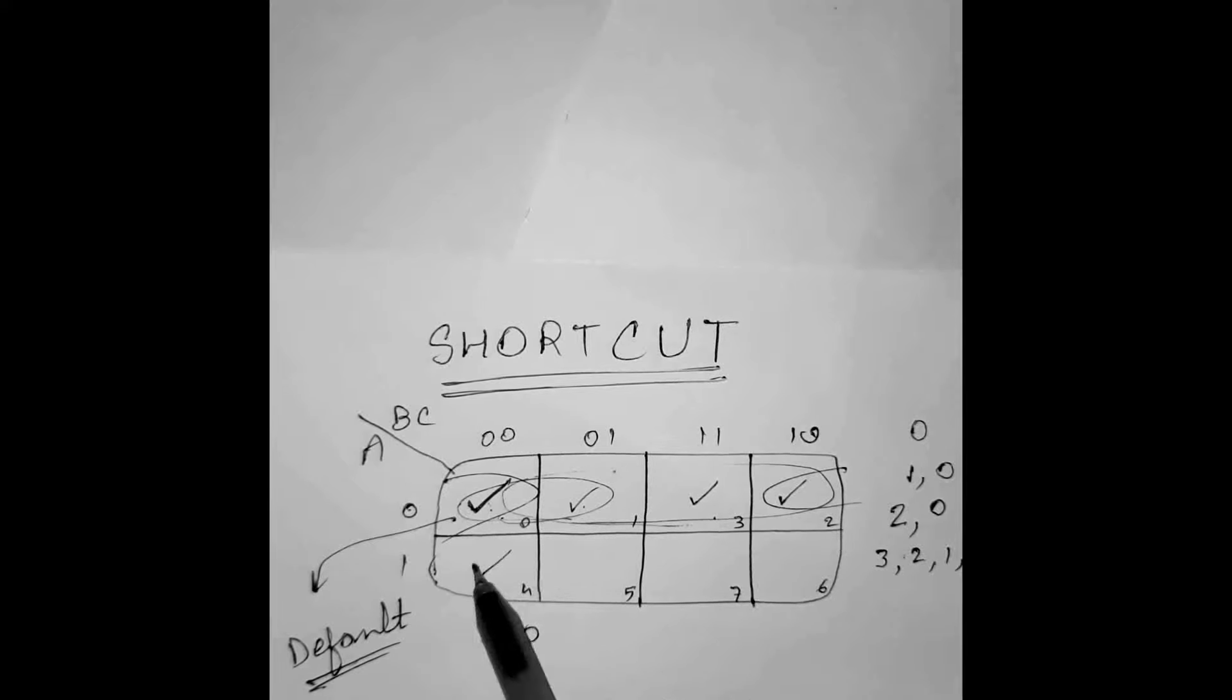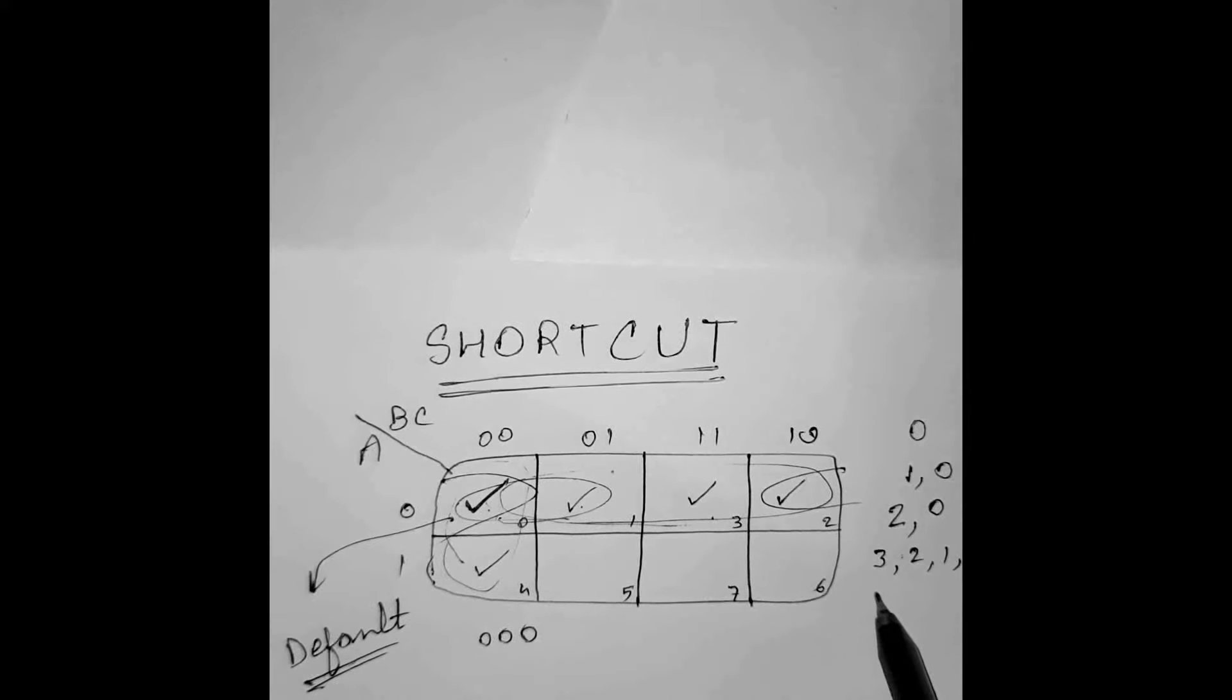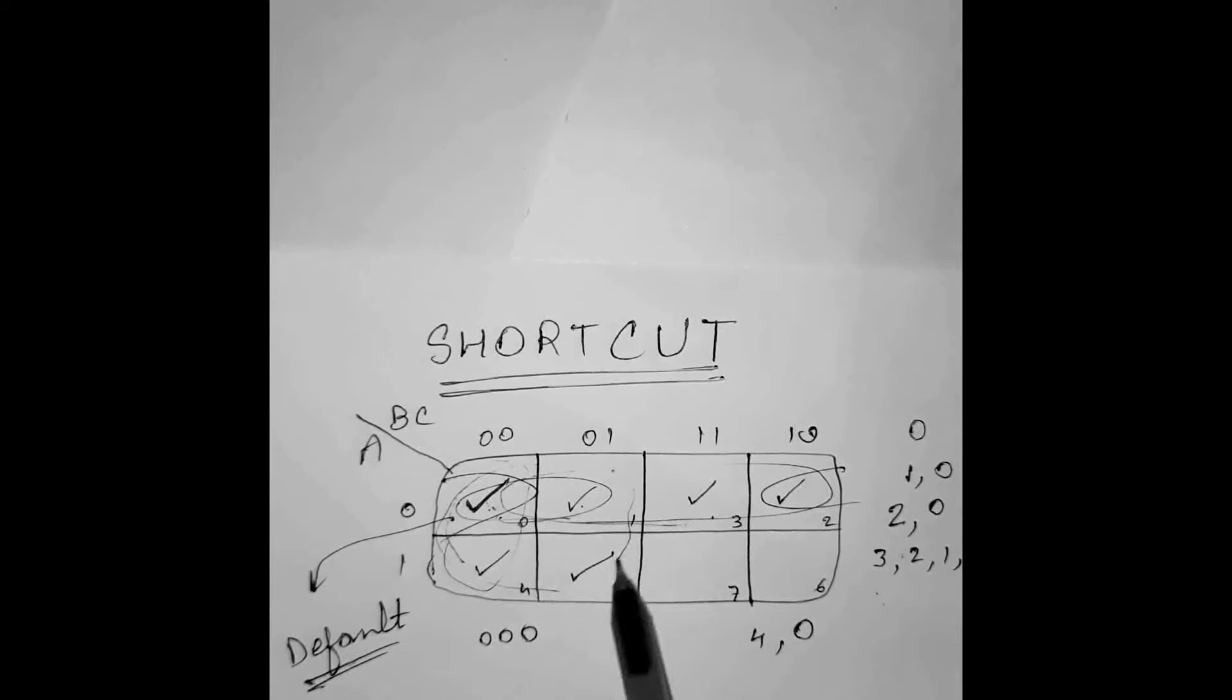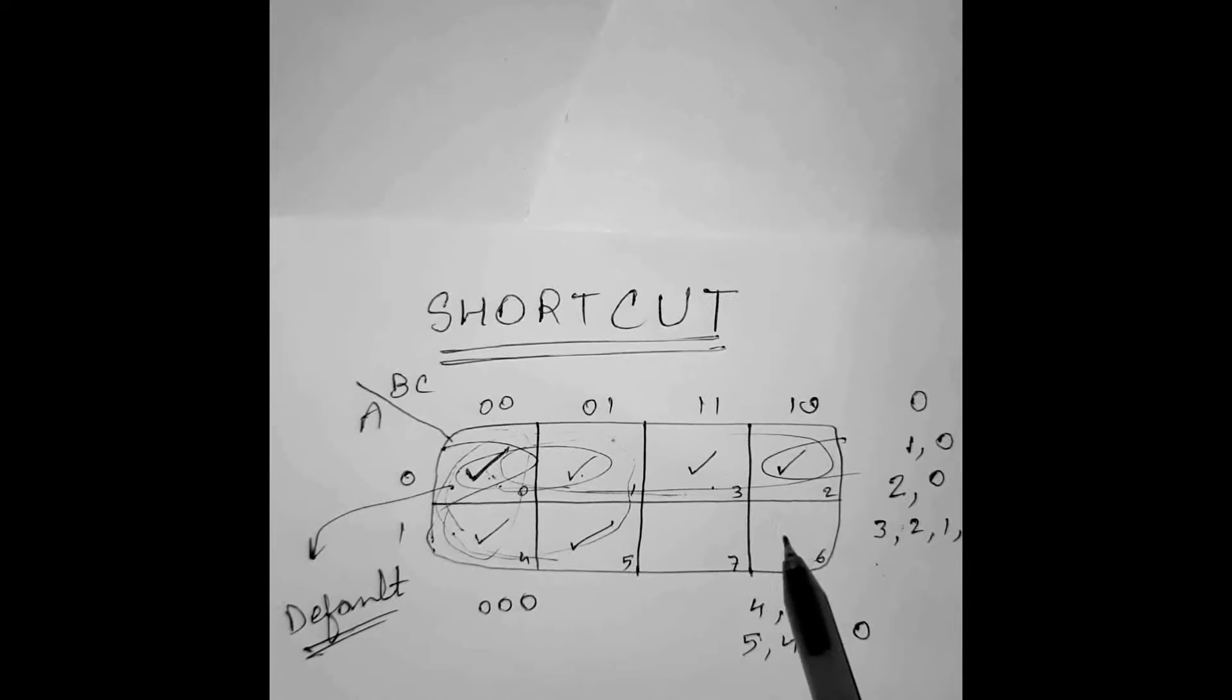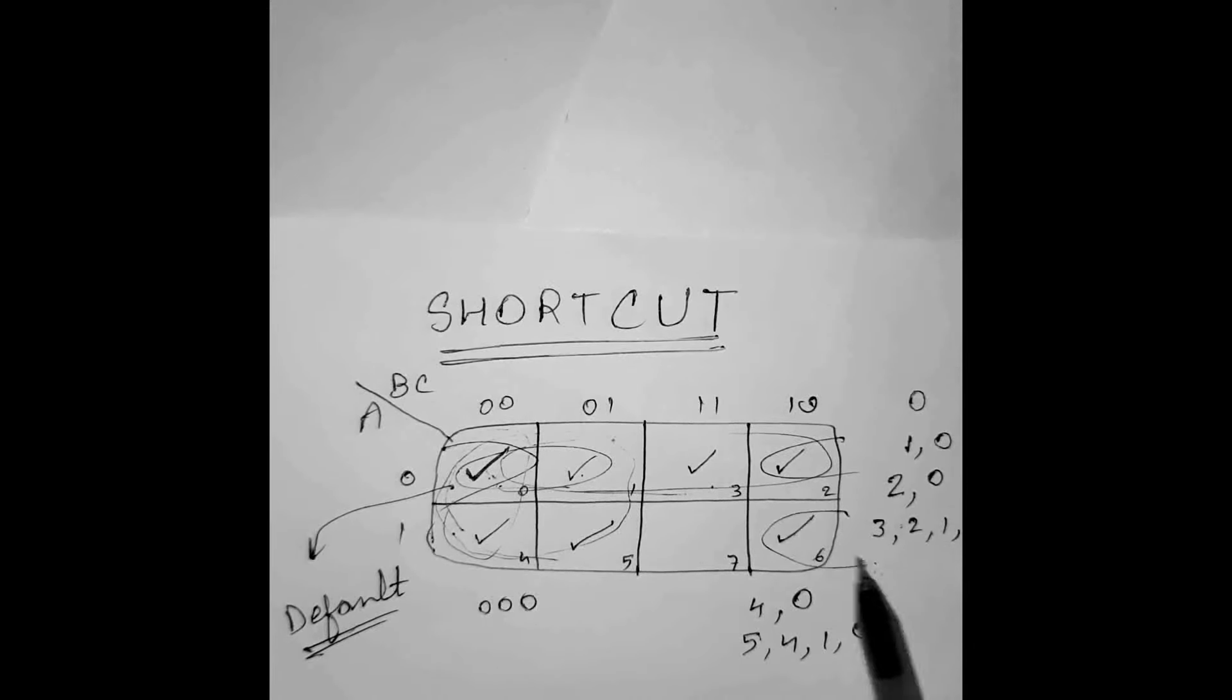For G5, this is default. So we will take all into account: 5, 4, 1, 0. For 6, this, this, this and this: 6, 2, 4, 0.